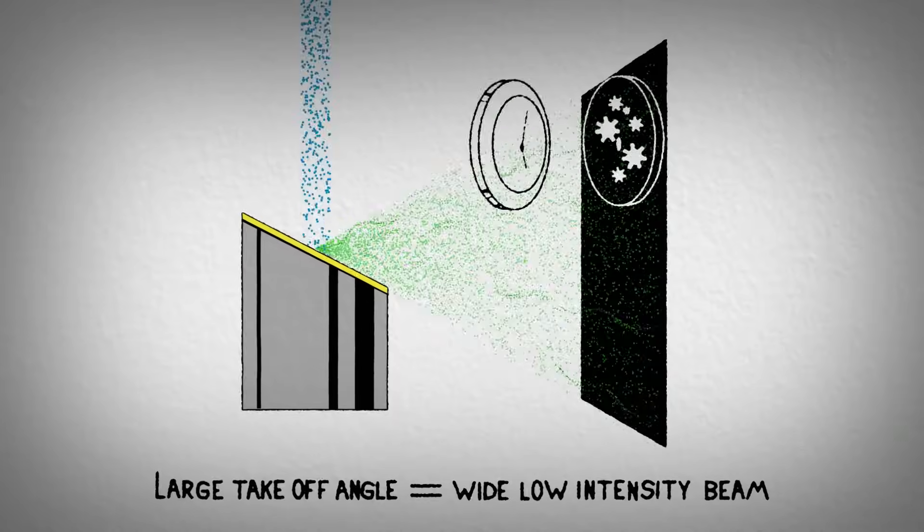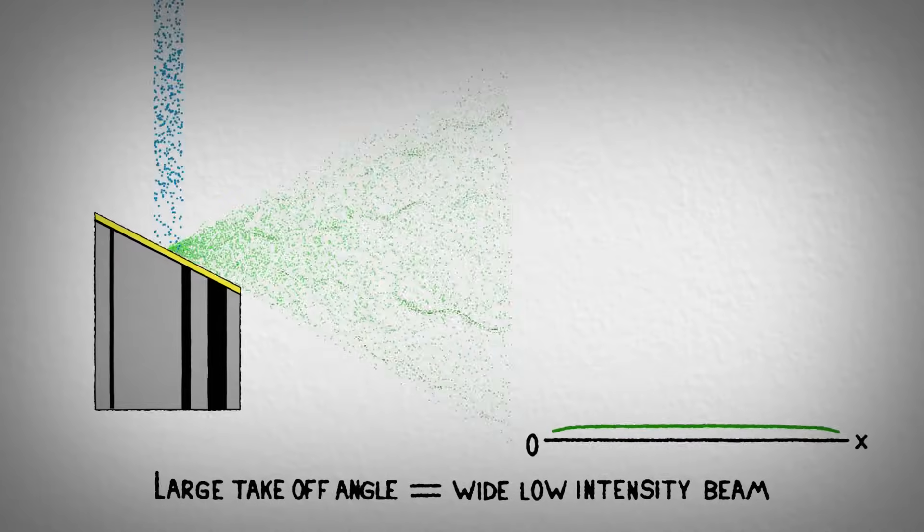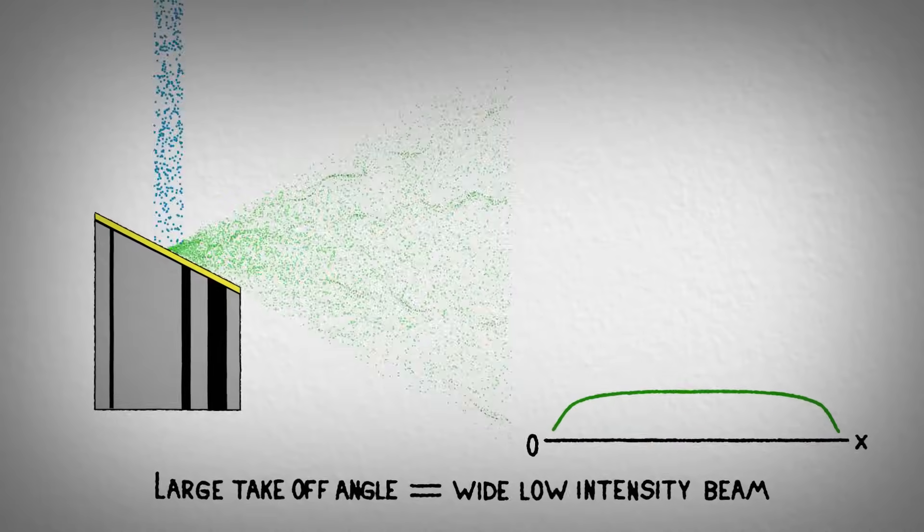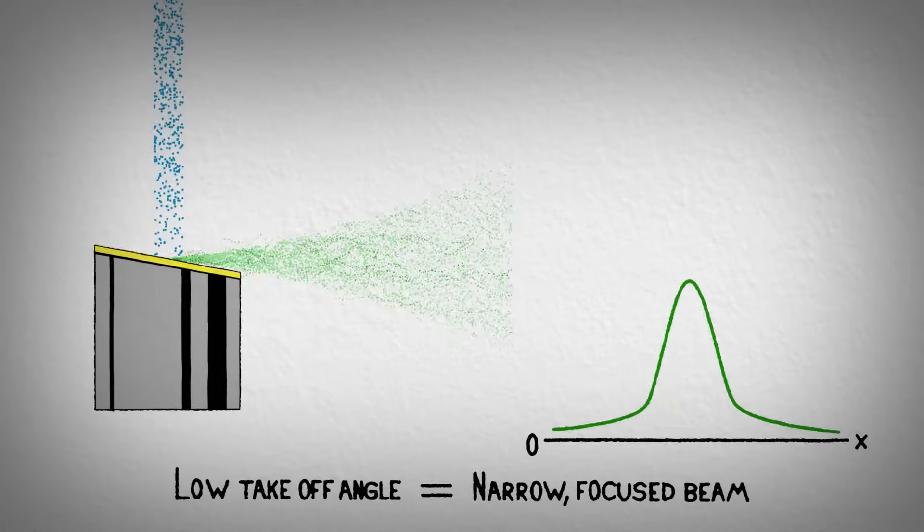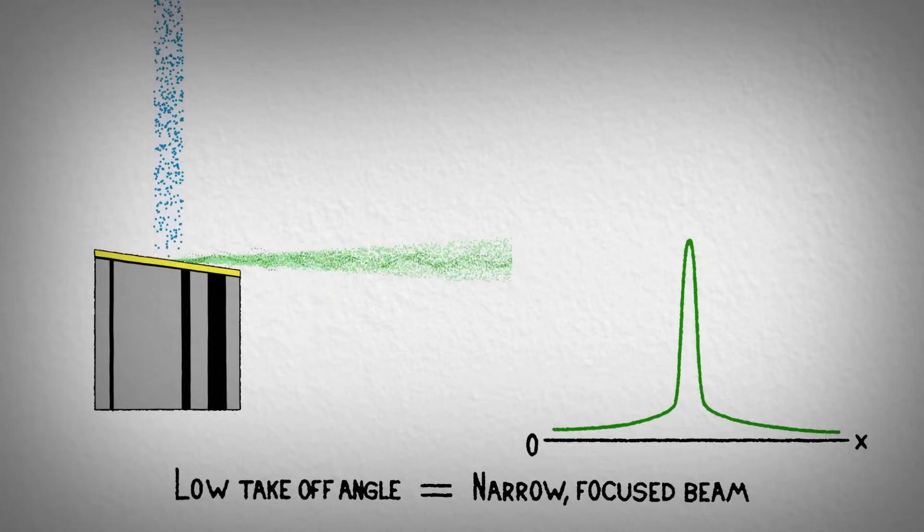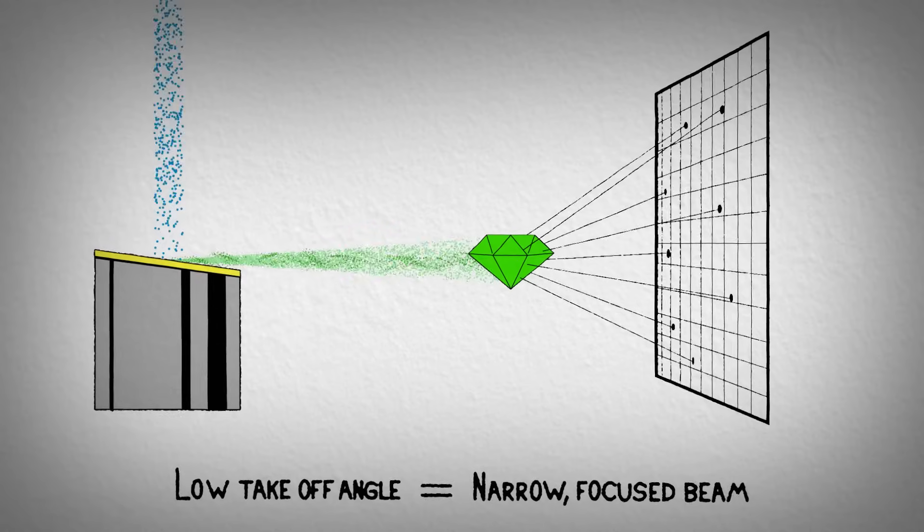Tubes designed for non-destructive testing and imaging applications typically have a high takeoff angle, providing a wider spreading and even dispersion of the X-ray flux. As the takeoff angle is lowered, the beam intensity and energy focus increases. Tubes with low takeoff angles are ideal for single-crystal diffraction experiments.